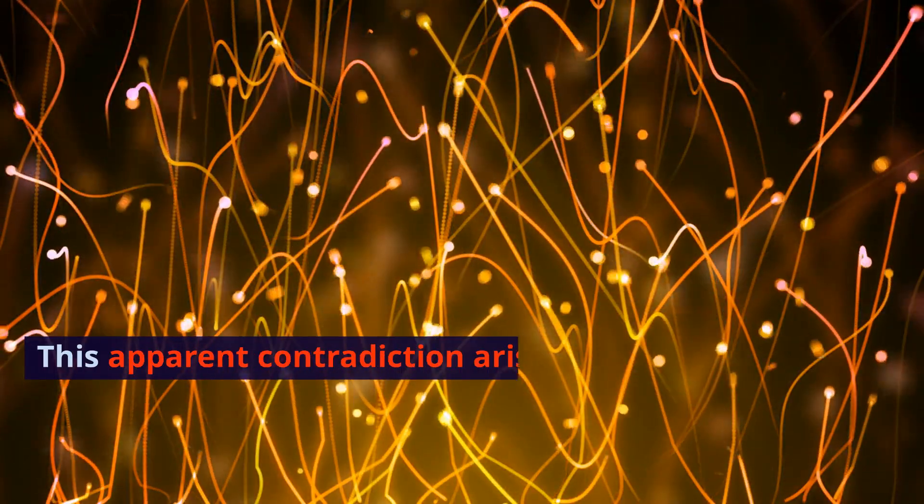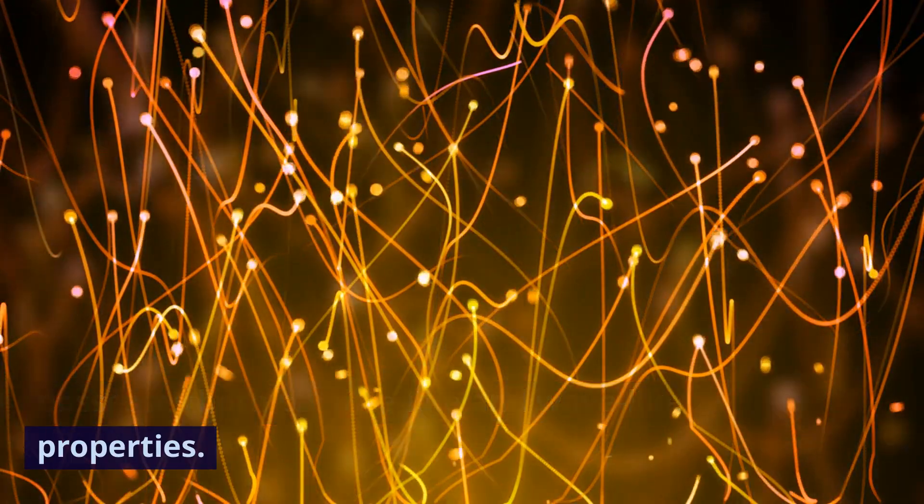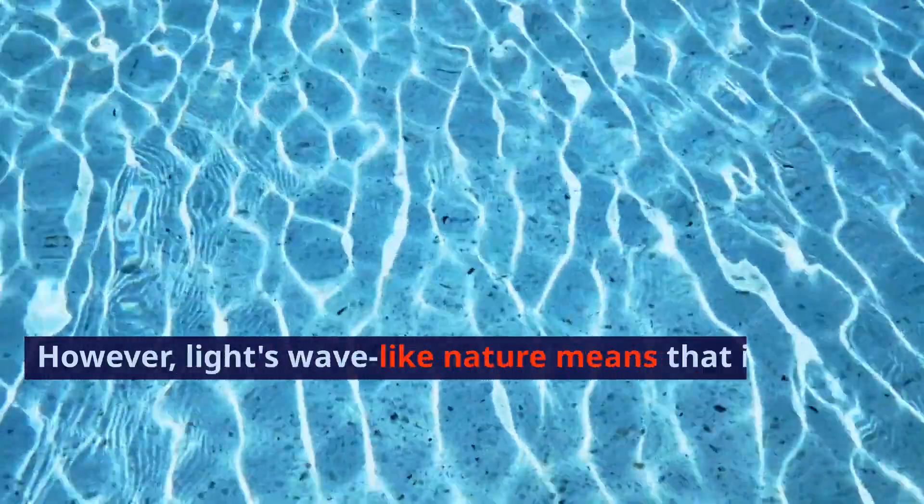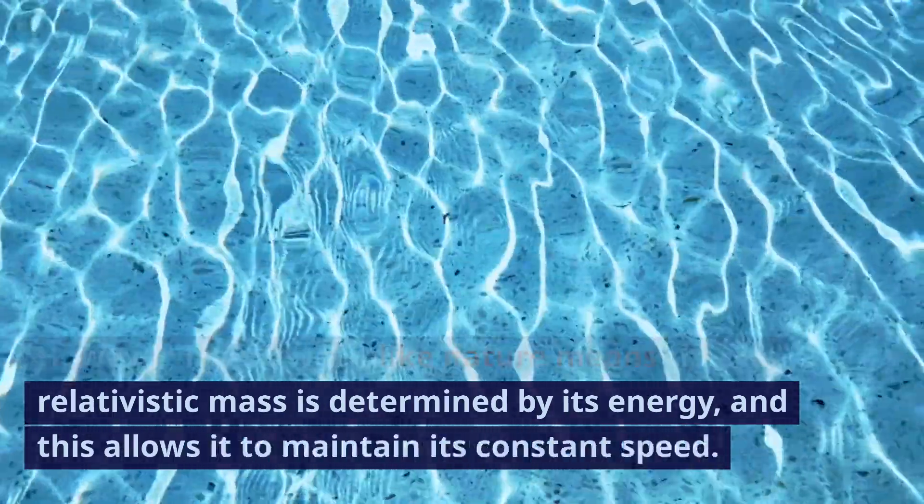This apparent contradiction arises because light possesses both particle-like and wave-like properties. Particles have mass, and to reach the speed of light, infinite mass would be needed. However, light's wave-like nature means that its relativistic mass is determined by its energy, and this allows it to maintain its constant speed.